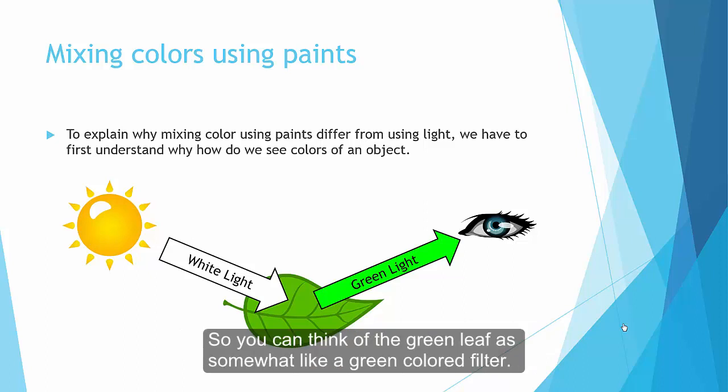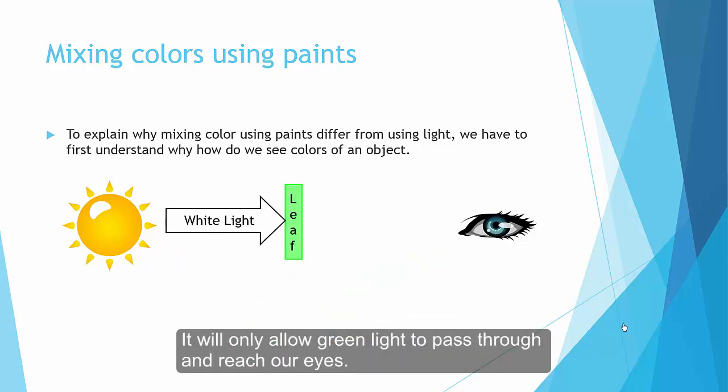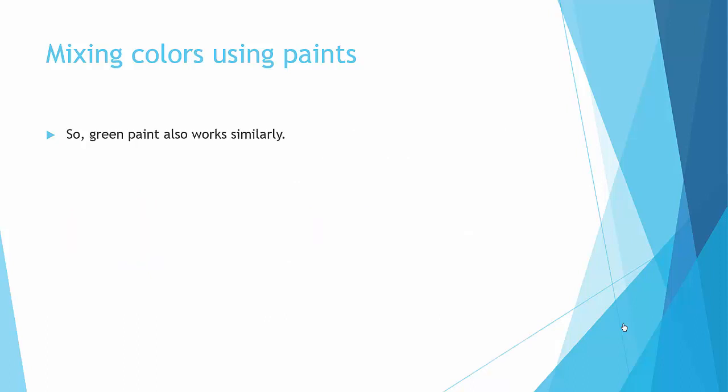So you can think of a green leaf as somewhat like a green color filter. It only allows green light to pass through and reach our eyes. So a green paint also works similarly. It only reflects green light and absorbs the rest.